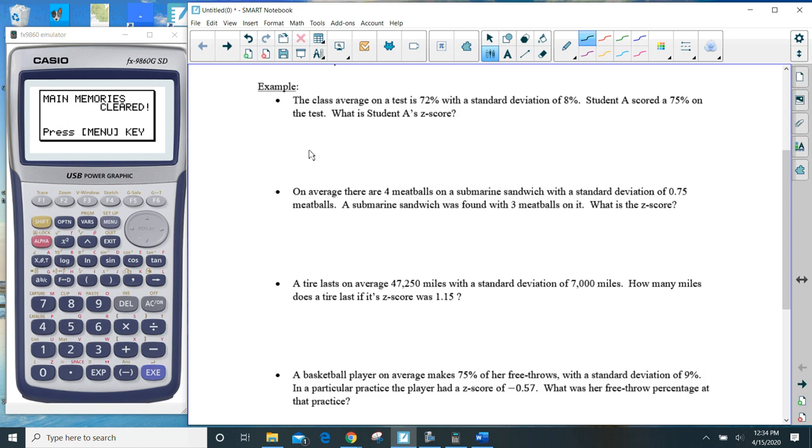The first one says the class average on a test is 72. So the average is 72 with a standard deviation of 8. A student A scored 75, so that is an individual value. What is that student's Z-score? So here the question is, what the heck is Z?